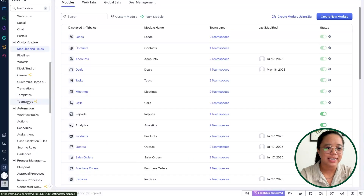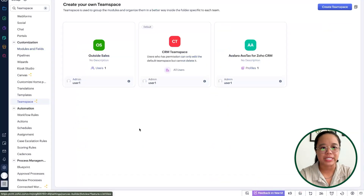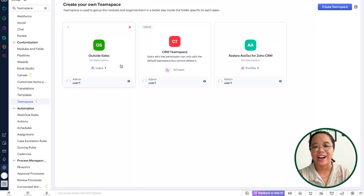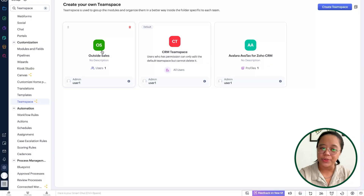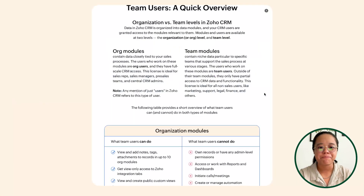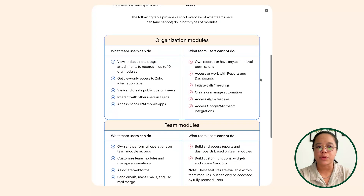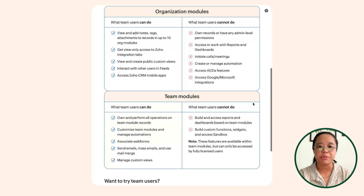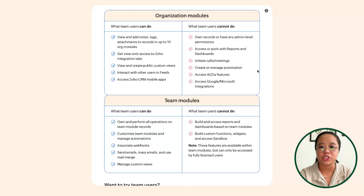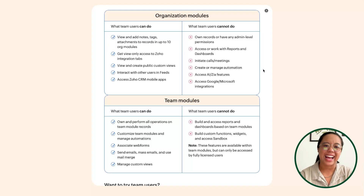Going back to team spaces, we have outside sales in our example. Our goal is to have team users added to this outside sales team space to only access the leads module and supplementary modules that support it. An example of an organization module is something like contacts — it exists in my organization, but it's not included as part of the outside sales team space. An example of a team module would be leads, tasks, meetings, and calls, because they are assigned to the outside sales team space.